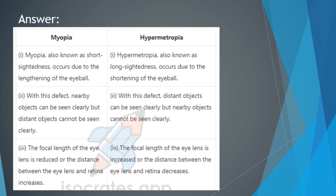The third difference: in myopia, the focal length of the eye is reduced, or the distance between the eye lens and the retina increases. This follows from myopia occurring due to the lengthening of the eyeball, so the distance between the eye lens and retina is lengthened. For hypermetropia, the reverse is true — the distance between the eye lens and retina decreases due to shortening of the eyeball, and the focal length of the eye lens is increased.